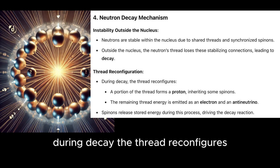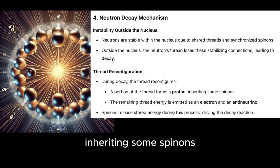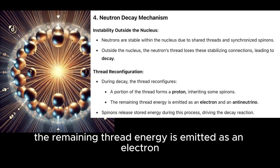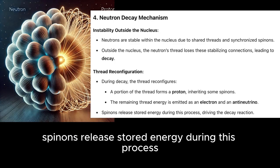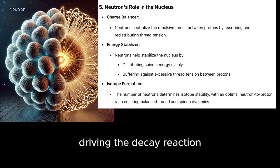Thread reconfiguration. During decay, the thread reconfigures. A portion of the thread forms a proton, inheriting some spinons. The remaining thread energy is emitted as an electron and an antineutrino. Spinons release stored energy during this process, driving the decay reaction.